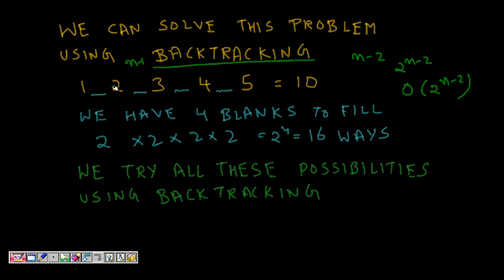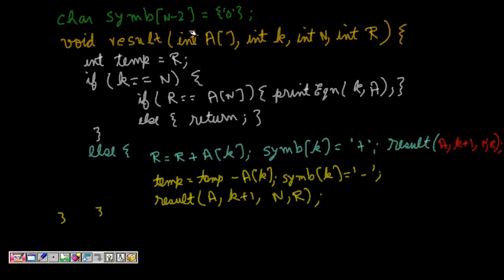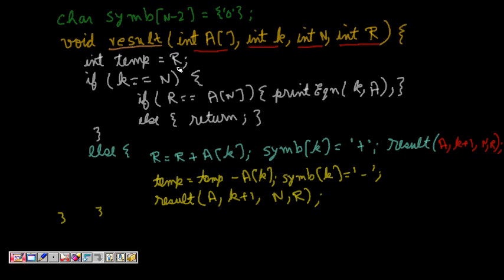In the code, we define a character array 'symbol' to store the plus and minus signs used in the expression. We have a 'result' function that checks if LHS equals RHS. It takes the array a, depth k (the current level tried), total count n, and r (the result calculated so far). We store a copy of r in temp.